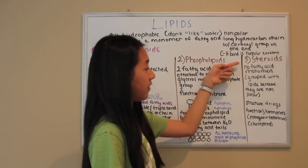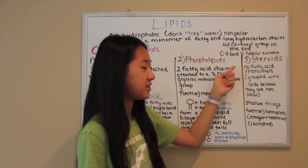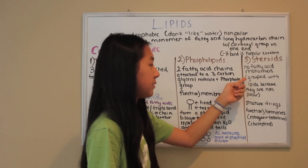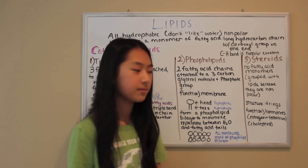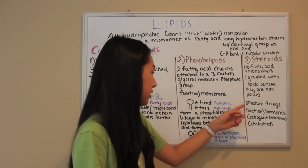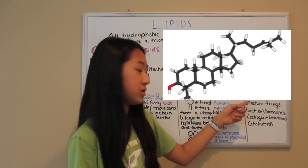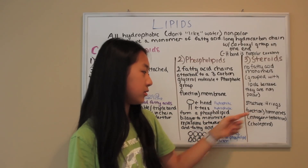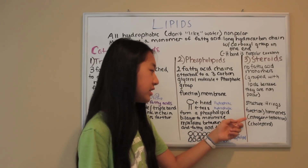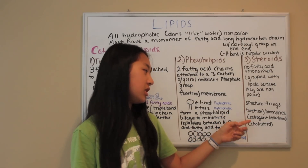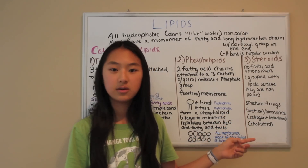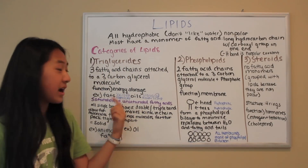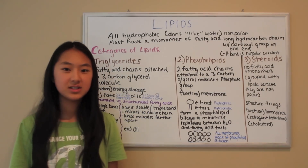Steroids have no fatty acid monomers and are only grouped with lipids because they are nonpolar. Their structure is four rings and their function is hormones such as estrogen, testosterone, or cholesterol. Those are the three categories of lipids.